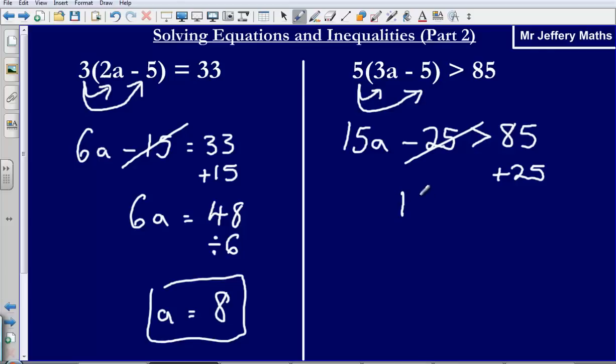And so what I'm left with is 15a is greater than 85 plus 25, that's going to give me 110.